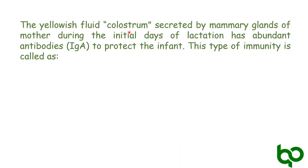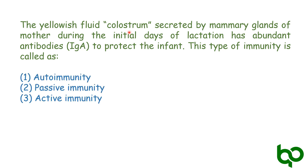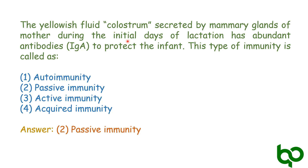The yellow fluid colostrum is secreted by mammary glands of mother during the initial days of lactation. It has abundant antibodies IgA to protect the infant. This type of immunity is called — options are: autoimmunity, passive immunity, active immunity, and acquired immunity. The answer is option 2: passive immunity. Passive immunity is when ready-made antibodies are directly given to an individual. Colostrum is the breast milk produced in the first few days after delivery, and it is rich in antibodies such as IgA. This type of immunity acquired by the infant is an example of passive immunity.